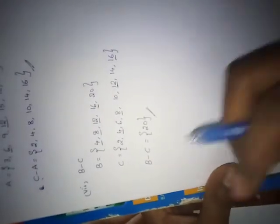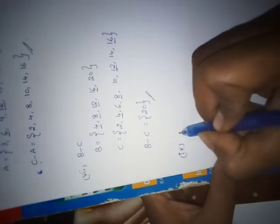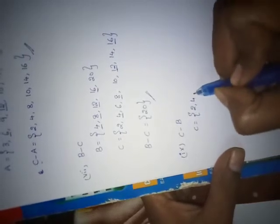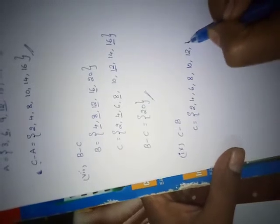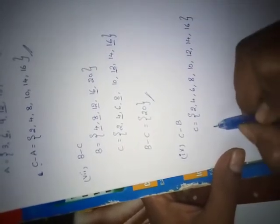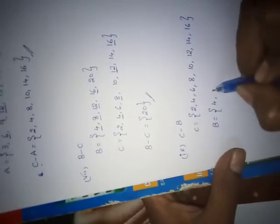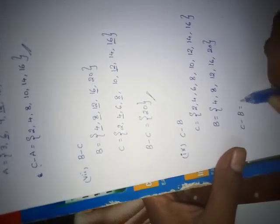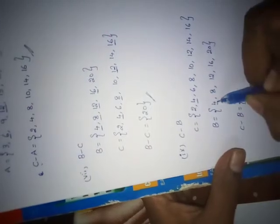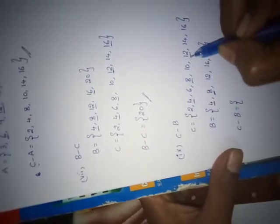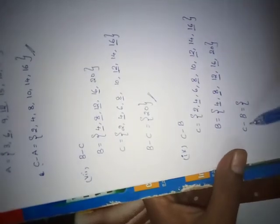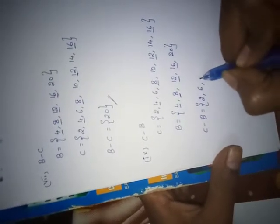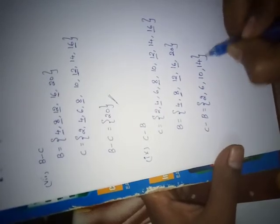The next problem is the 9th one: C minus B. What are the elements in C? 2, 4, 6, 8, 10, 12, 14, 16. And the elements in B: 4, 8, 12, 16 and 20. Now C minus B — underline the common elements: 4, 8, 12 and 16. The remaining elements in C are 2, 6, 10 and 14. That will be the answer.